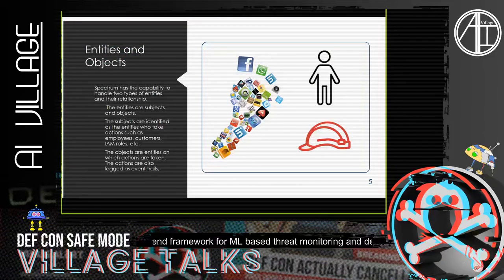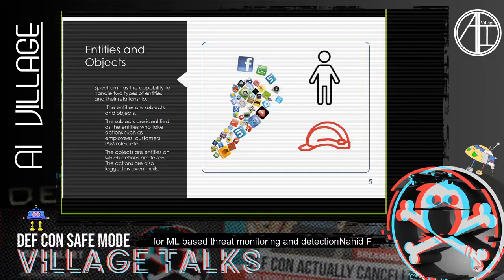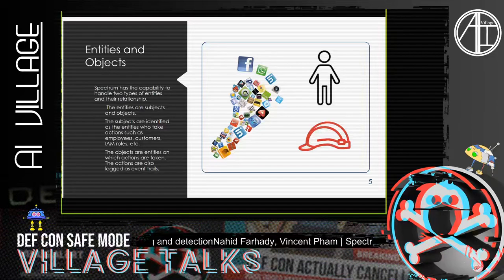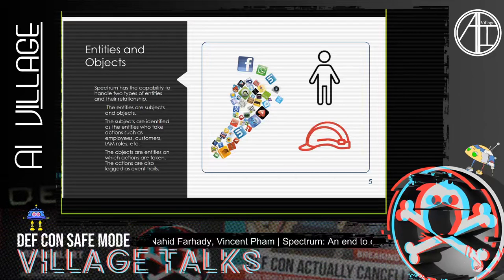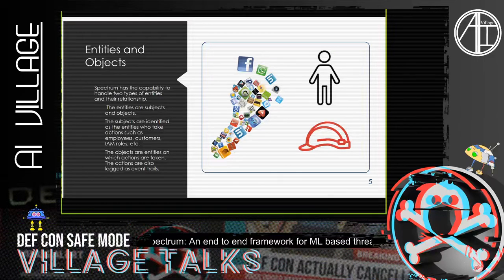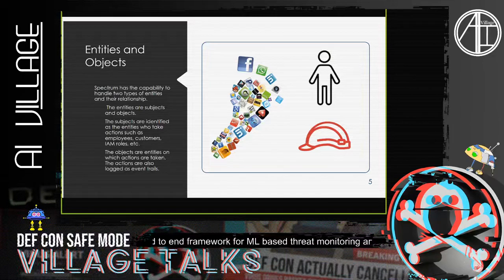To combat insider threat, we built a system called Spectrum, which operates on two types of entities and the relationship between them. The entities are subjects and objects. Subjects are types that take action — in the simplest sense, these are employees, but you could also consider IAM roles in AWS, which are groups of profiles gathered together, or customers as your subjects.